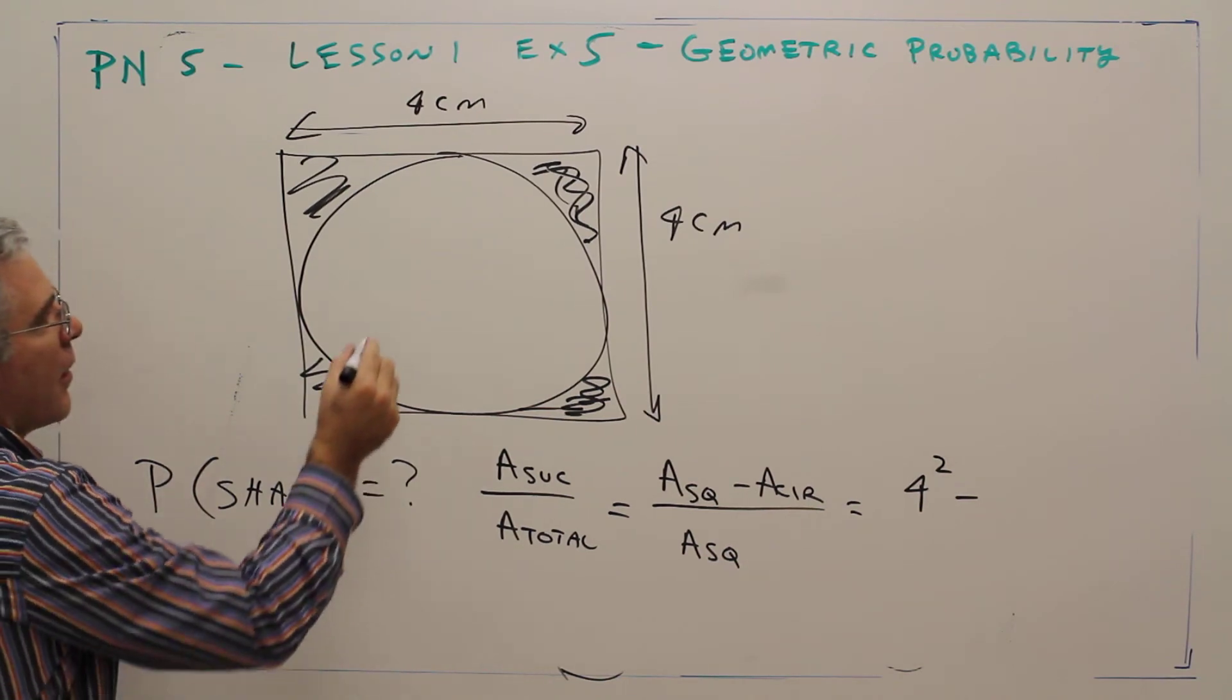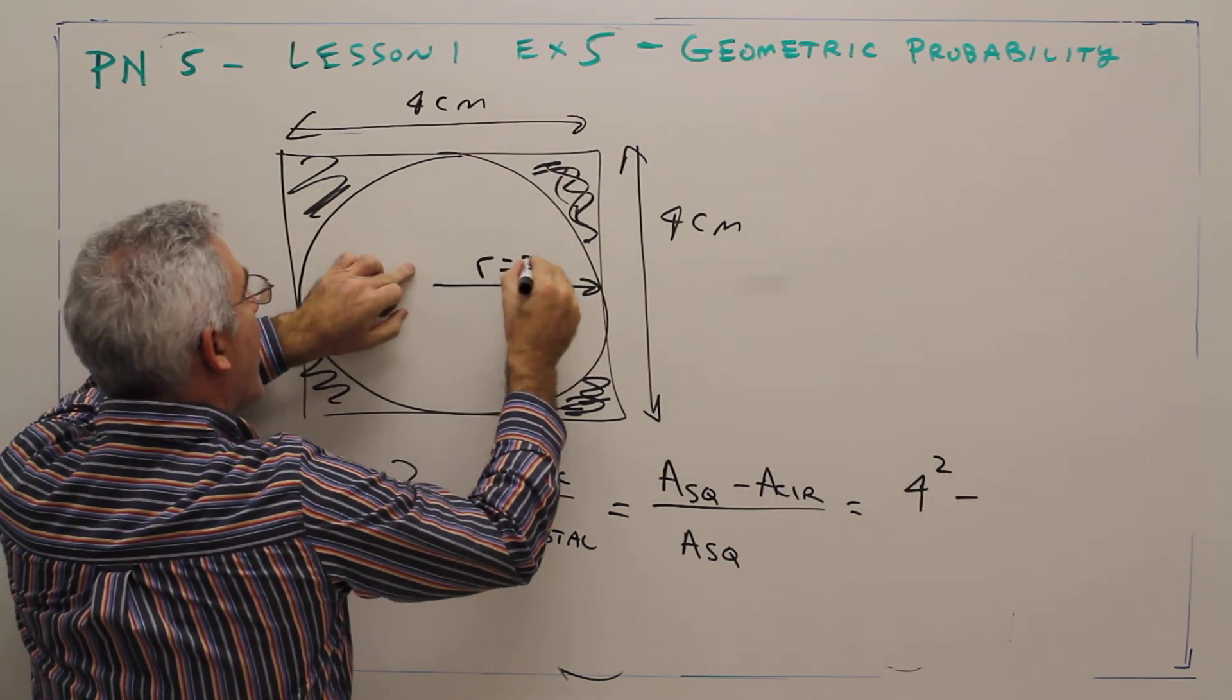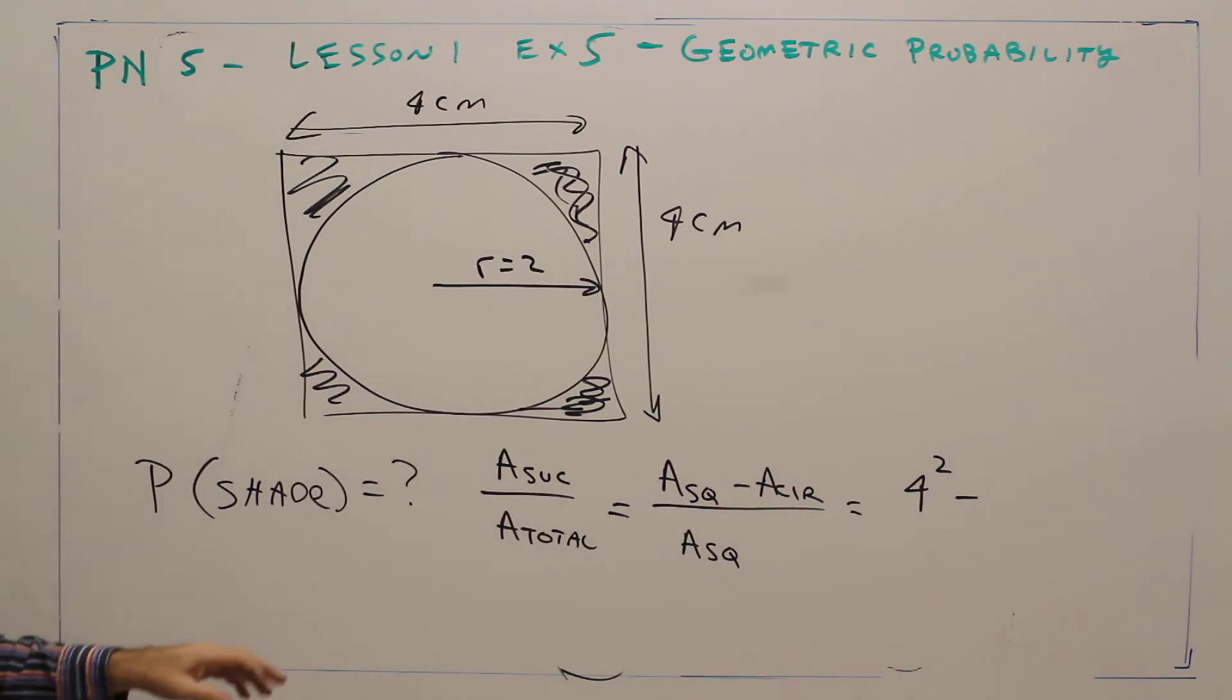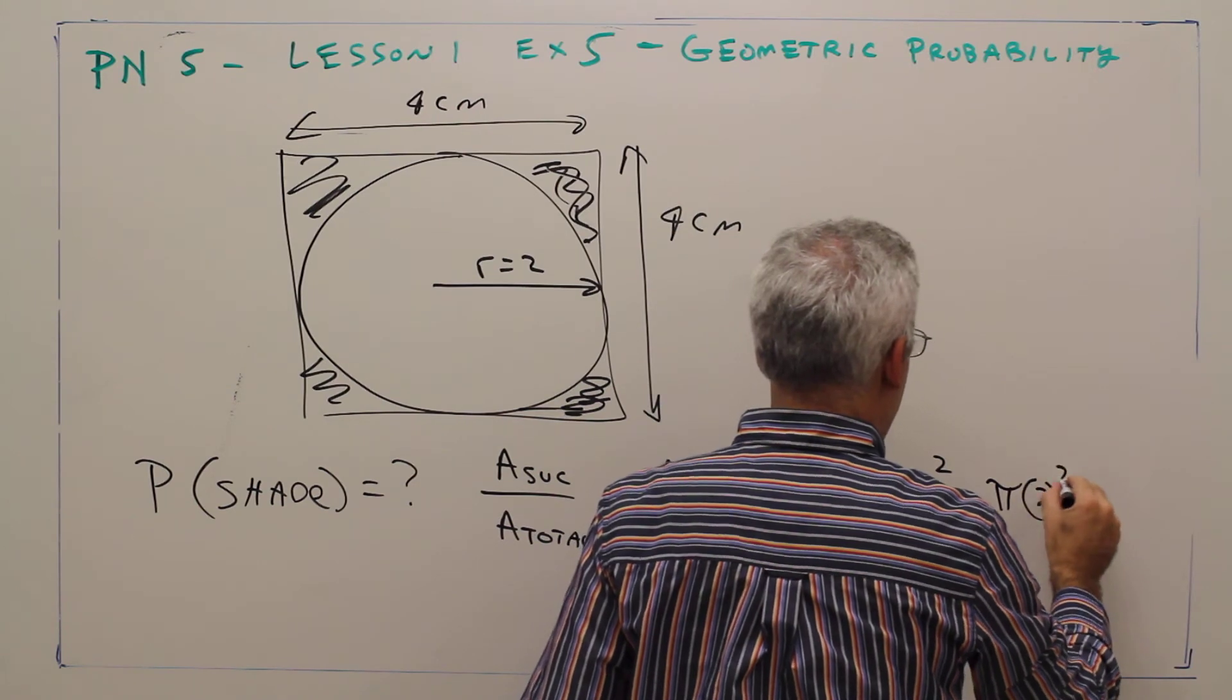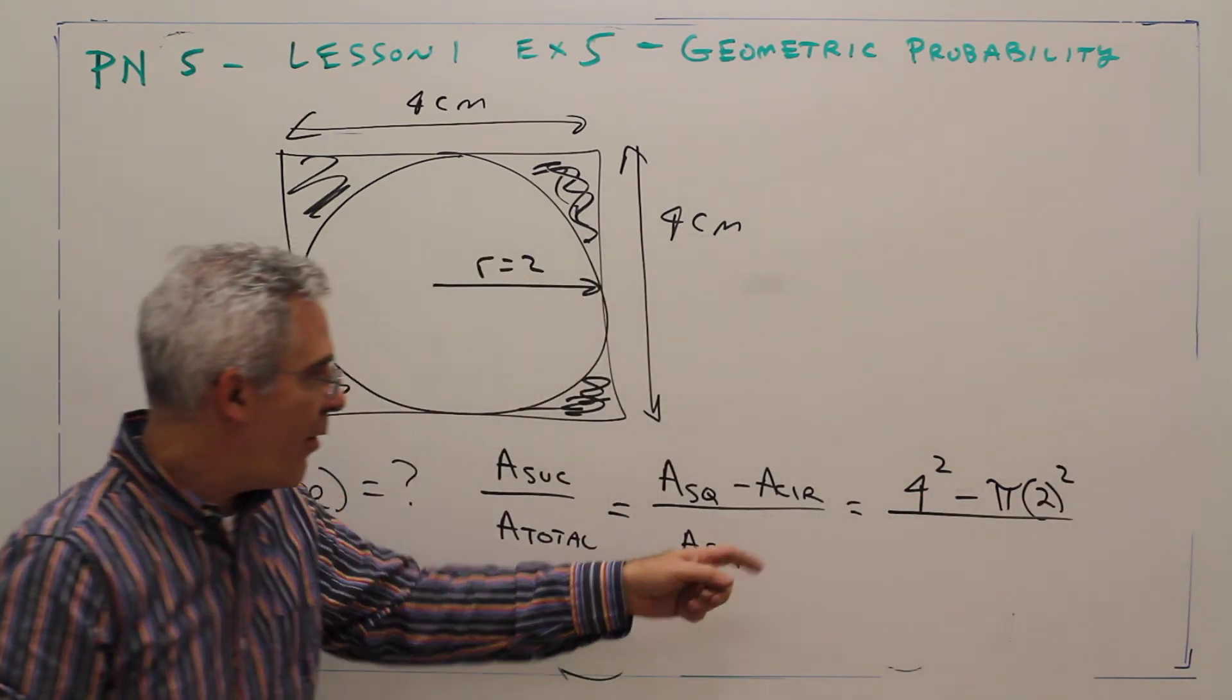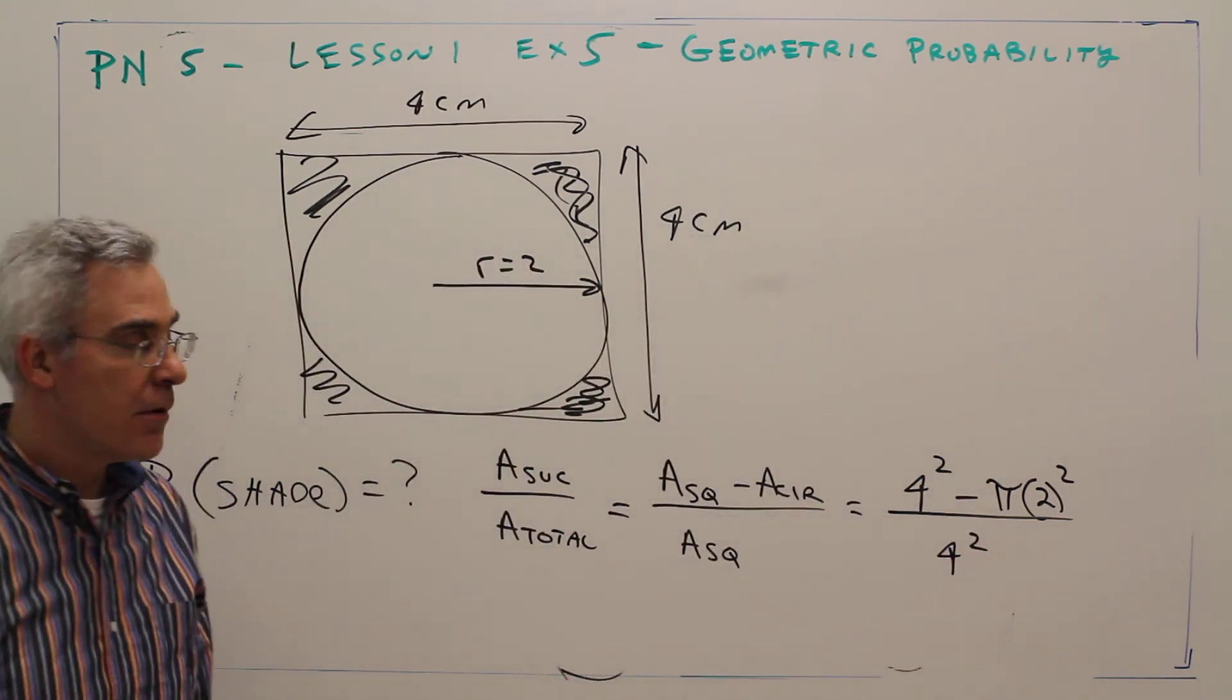The area of the square is simply four by four. The circle—well, if the whole side is four, the radius is two. So the area of the circle is pi r squared: pi times two squared. And again, the area of the square was just four squared.